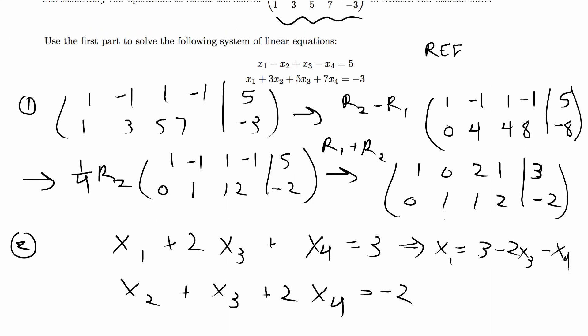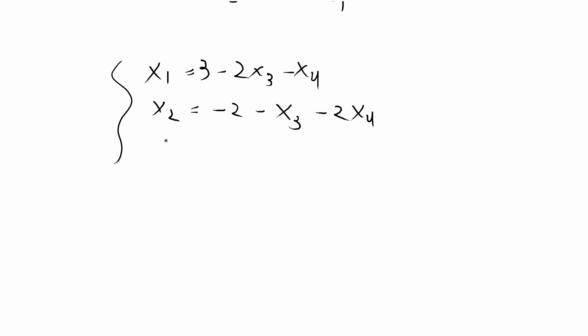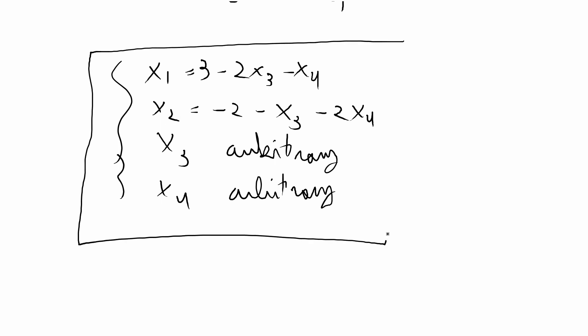We have two equations and four unknowns, so we're going to say that x3 is arbitrary and x4 is arbitrary because any values will satisfy that equation for x1 and x2. So this problem has infinite solutions and we are done with this problem.